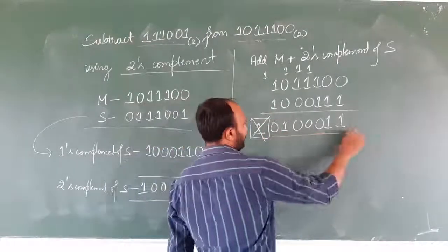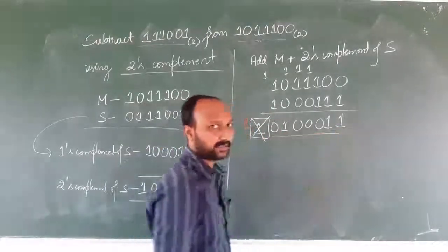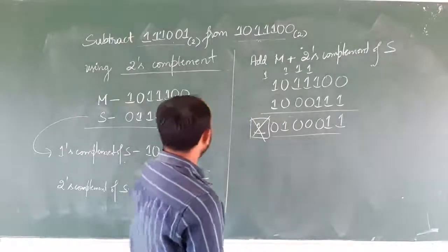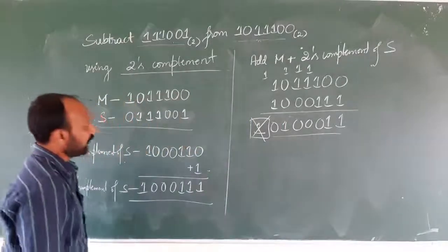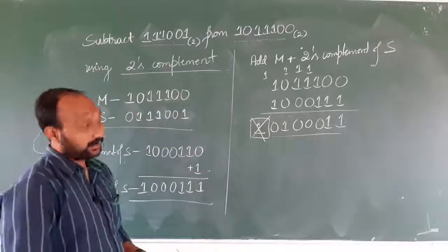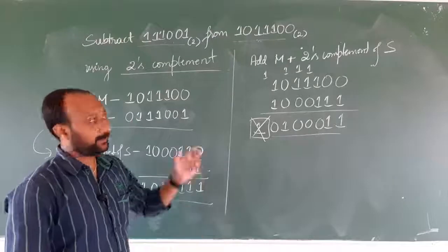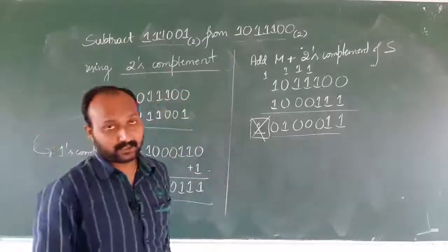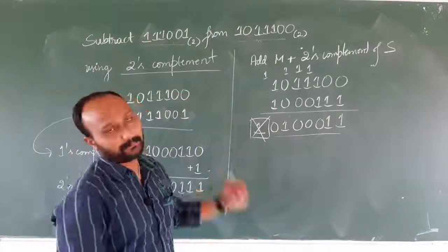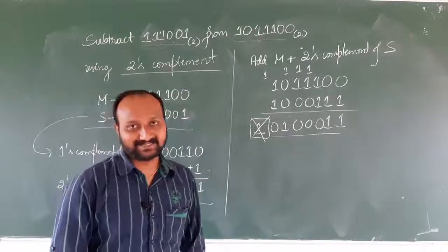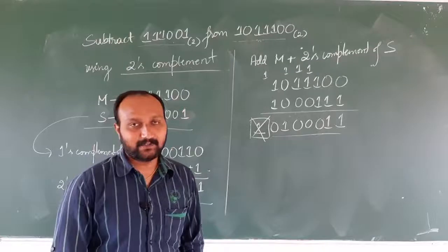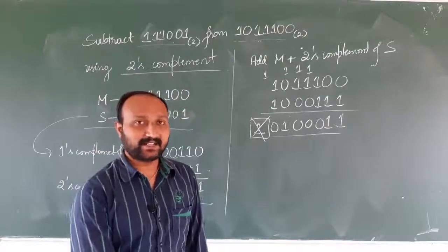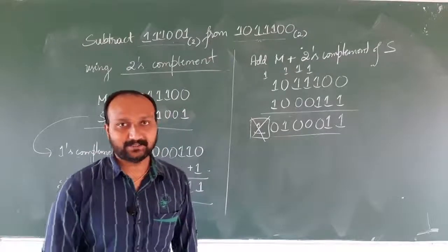So this is the answer — this is the final answer. This is how you perform binary subtraction using two's complement method. I hope you have understood. With this, I am going to end this video. Thank you.